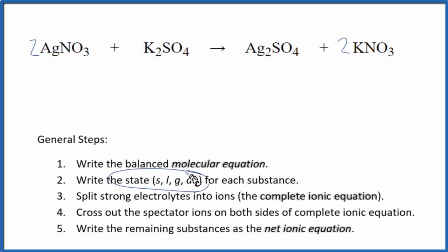Now I need to write the states for each substance. Nitrates are very soluble. In water they will dissolve, dissociate into their ions. So we're going to write aqueous after our silver nitrate. Potassium compounds and sulfate compounds are usually soluble. So we're going to write AQ for that as well. Silver sulfate, silver is an odd compound when it comes to solubility.